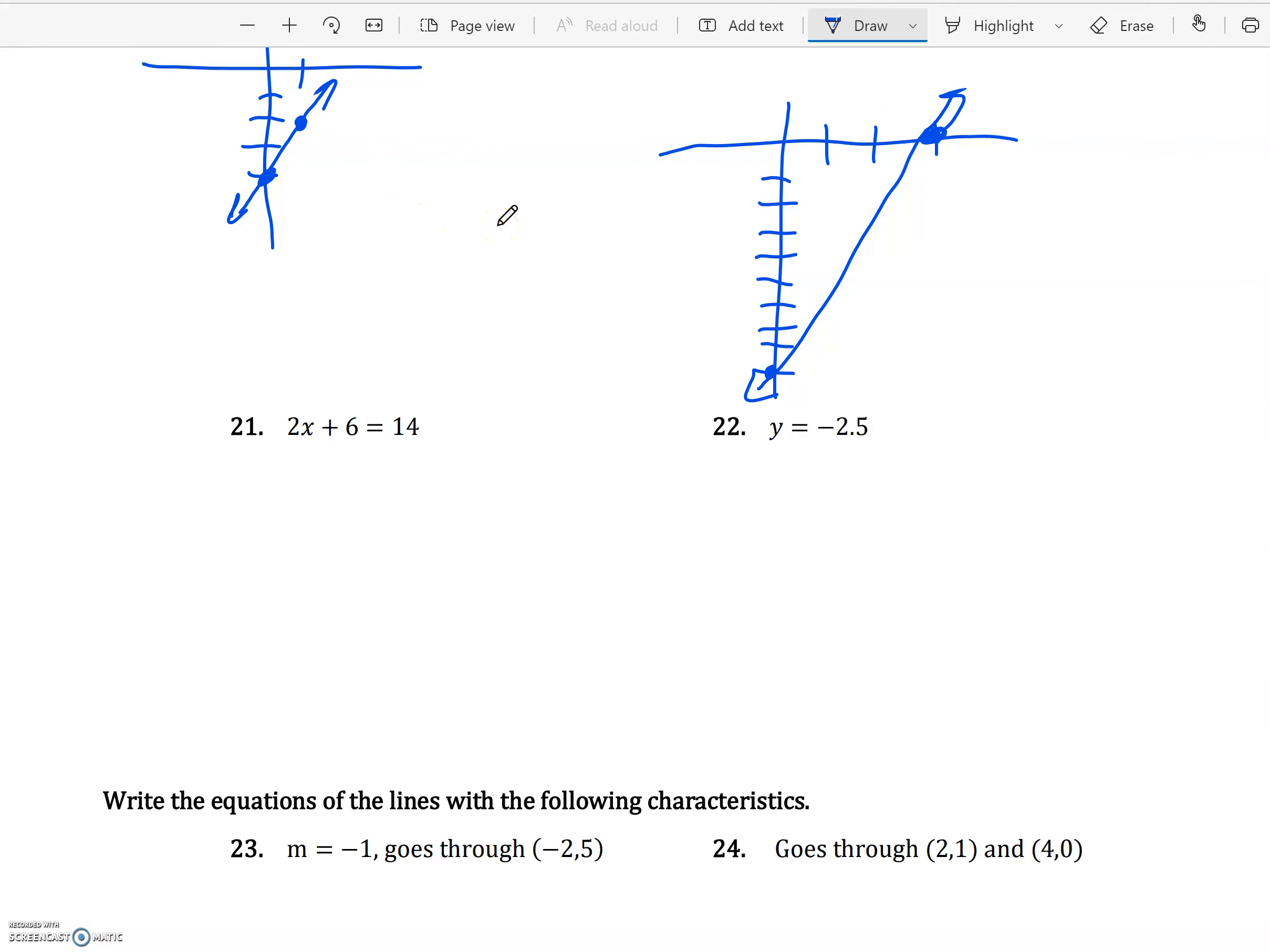21, if you notice, it has no y. It's just an x in its equation. That means it's going to be a vertical line. And all we have to do is figure out where that vertical line is on the axis. So we're going to start by just solving like it's a regular equation. Subtract 6 from both sides. I have 2x equals 8 left. Divide both sides by 2. x equals 4. So that means I'm going to go on my x-axis. Let's make that a little bit straighter. 1, 2, 3, 4. And that's my vertical line of 2x plus 6 equals 14.